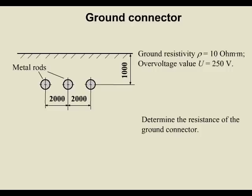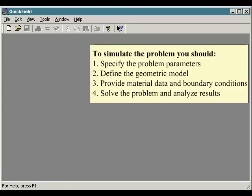Ground connector problem: ground resistivity 10 ohms meter, over voltage value 250 volts, determine the resistance of the ground connector. To simulate the problem you should specify the problem parameters, define the geometric model, provide material data and boundary conditions, solve the problem and analyze results.